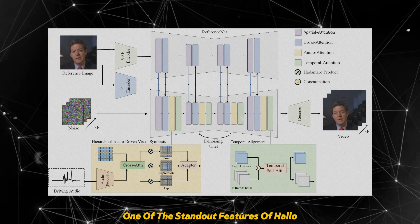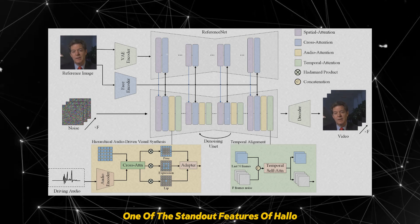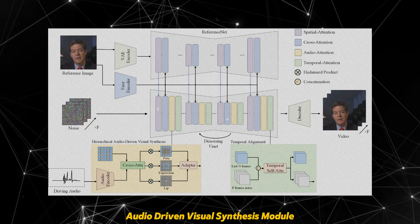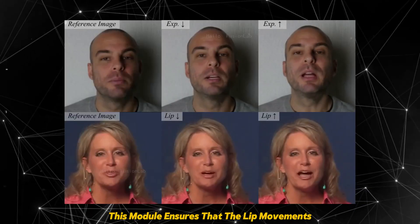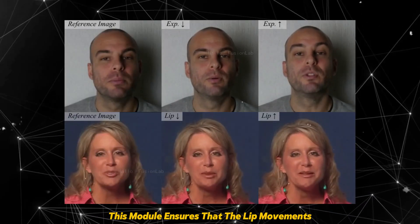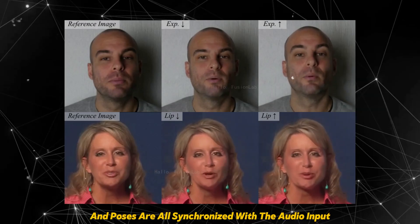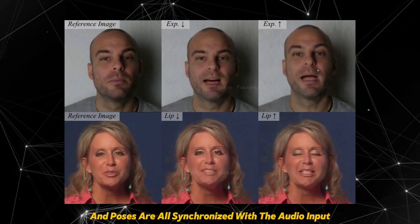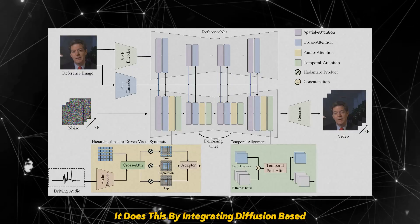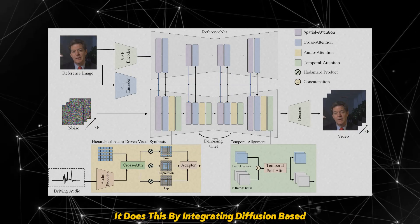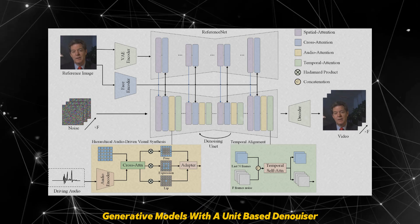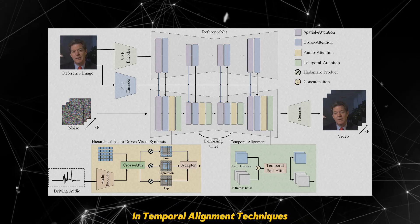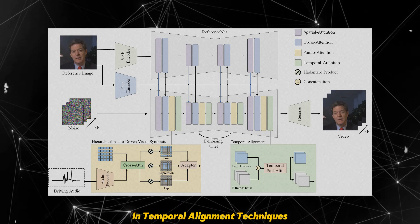One of the standout features of Halo is its hierarchical audio-driven visual synthesis module. This module ensures that the lip movements, expressions, and poses are all synchronized with the audio input. It does this by integrating diffusion-based generative models with a unit-based denoiser and temporal alignment techniques.